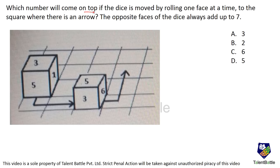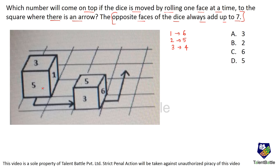Which number will come on top if the dice is moved by rolling one face at a time to the square with the arrow? The opposite faces of the dice always add up to 7 — so opposite to 1 is 6, opposite to 2 is 5, and opposite to 3 is 4. The dice rolls from its start position, going through each square in sequence to the final point.